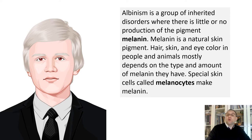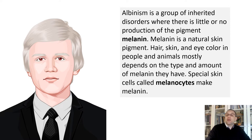Another condition caused by a point mutation is albinism — a group of inherited disorders where there is little or no production of the pigment melanin. Several genes provide instructions for making proteins involved in melanin production. Melanin is produced by cells called melanocytes, found in skin, hair, and eyes. Melanin also plays a role in the development of the optic nerve, so people with albinism have vision problems. Different types of albinism can occur based on which gene mutation caused the disorder. People with albinism are also sensitive to the sun and are at increased risk of developing skin cancer, though they can take steps to protect their skin and eyes.